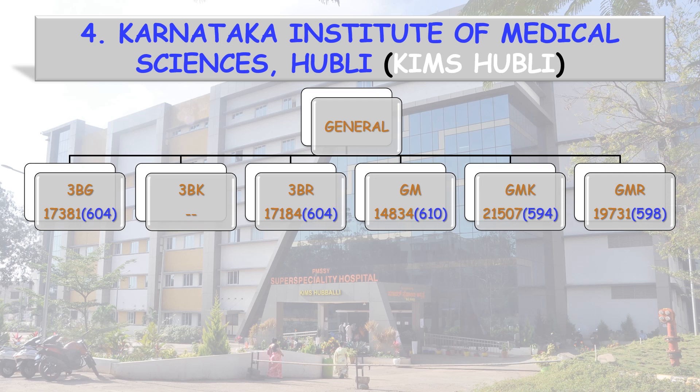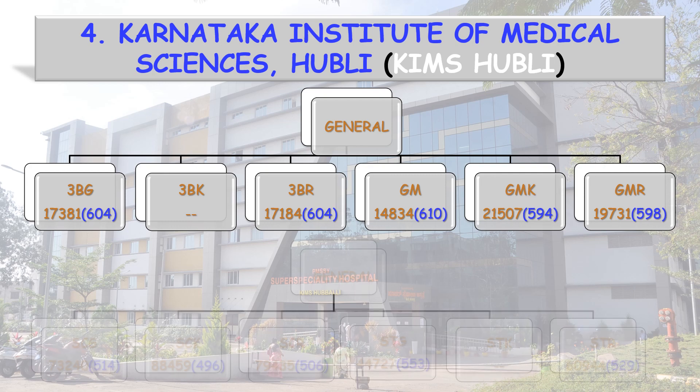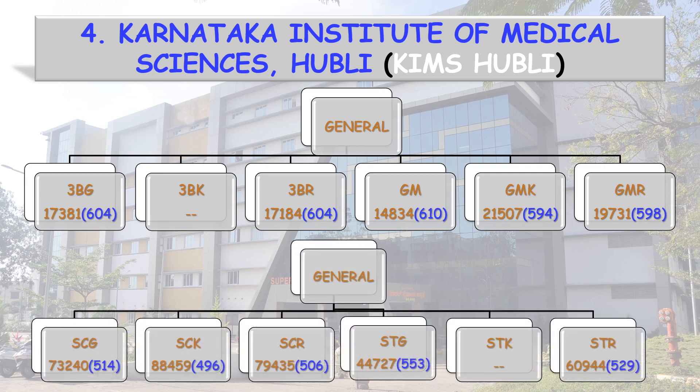General Merit (GM): All India Rank 14,834, score 610. General Merit Kannada Medium Study: score 594. General Merit Rural Study: 598. SC General: 514. SCK: 496. SCR: 506. STG: 553. STR: 529.